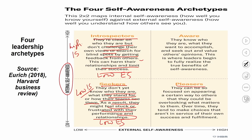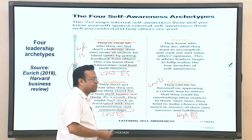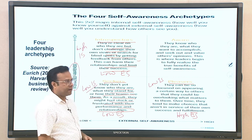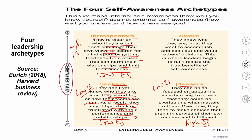Leaders with high external but low internal self-awareness are called 'pleasers.' They can be so focused on appearing a certain way to others that they overlook what matters to them. Over time they tend to make choices that aren't in service of their own success and fulfillment — while it may work in some contexts, lacking inner clarity impacts their own satisfaction.